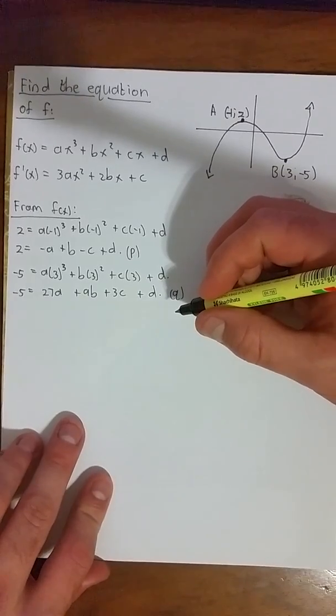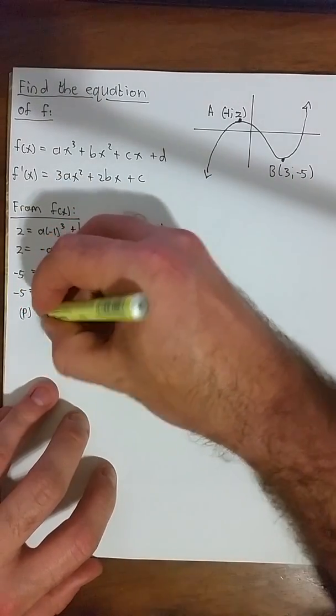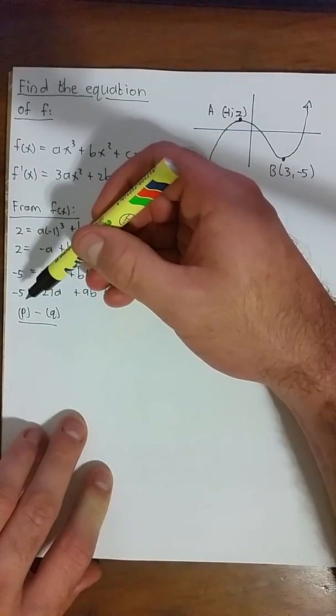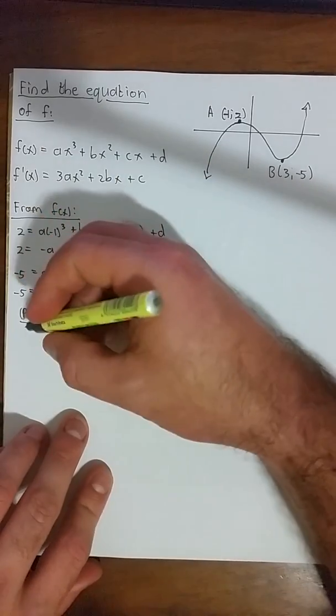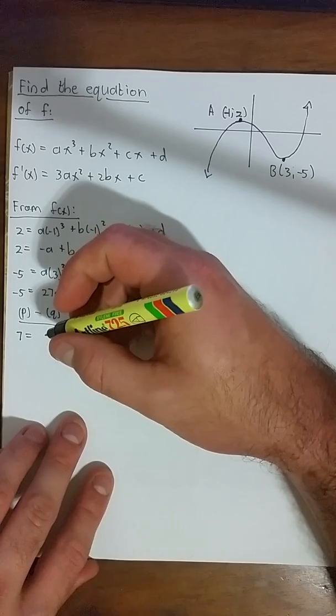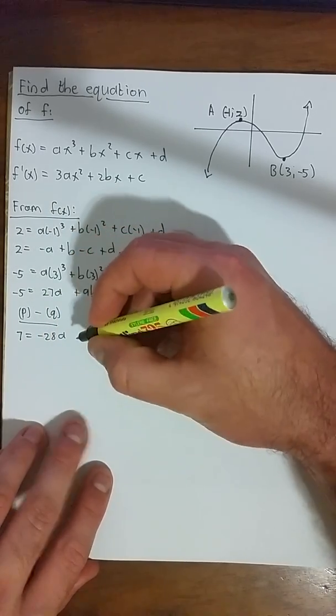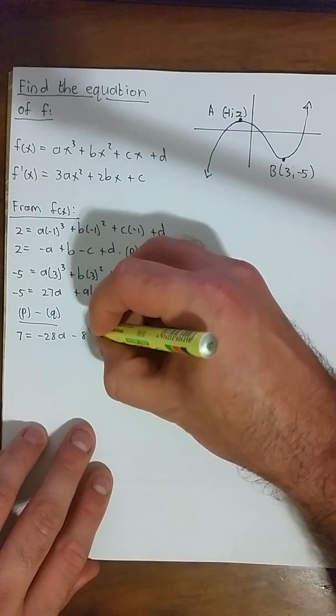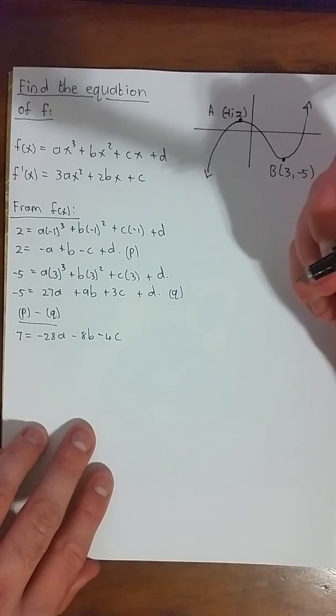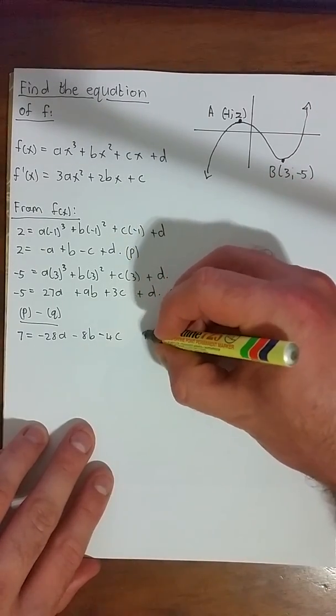Let's call this equation q, and now, if we subtract q from p, so p minus q, that gives us the following: 2 - (-5) = 7. -a - 27a = -28a - 8b - 4c, and d - d = 0. Now let's call this equation 1.